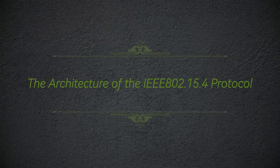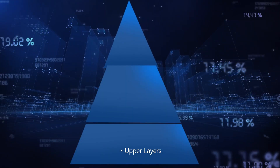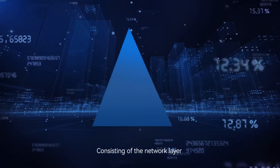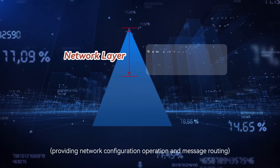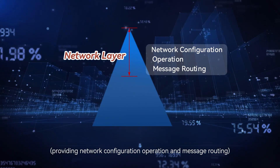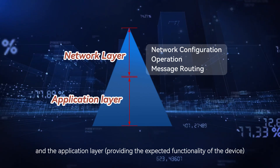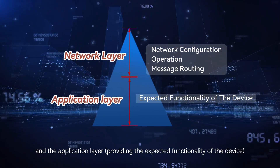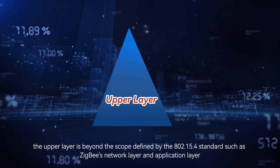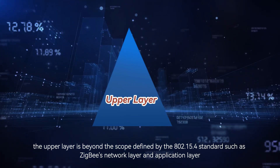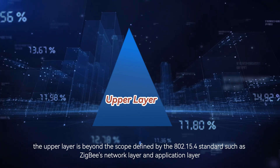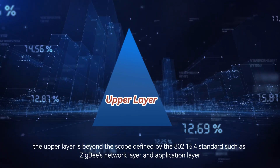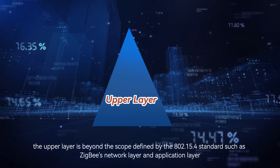The architecture of the IEEE 802.15.4 protocol consists of upper layers and lower layers. The upper layers consist of the network layer — providing network configuration, operation, and message routing — and the application layer, providing the expected functionality of the device. The upper layer is beyond the scope defined by the IEEE 802.15.4 standard, such as Zigbee's network layer and application layer.